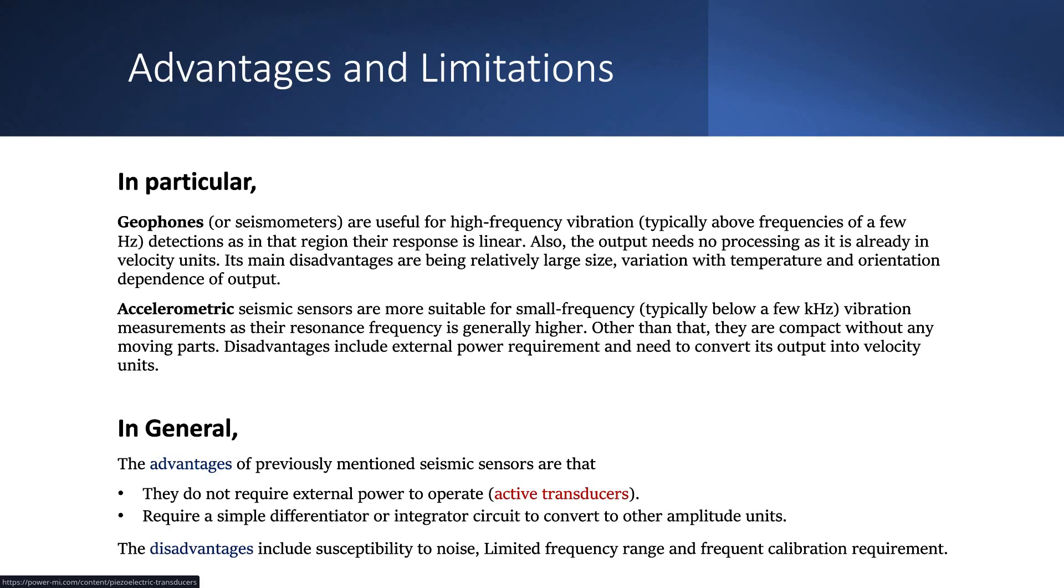What are the advantages and limitations of the seismometers? In particular, geophones are more useful in high frequency vibrations because their natural frequencies are generally in the lower end - for a typical geophone the resonance frequency is around 4Hz to 10Hz, and after that their response becomes linear. So we can use them for high frequency vibration detection. On the other hand, the accelerometer sensors have an upper bound and their operation region is generally below a few kilohertz, typically 10 or 20 kilohertz, and below that they give a linear response.